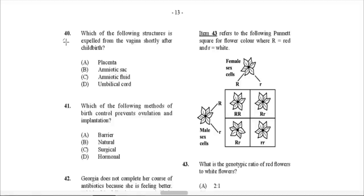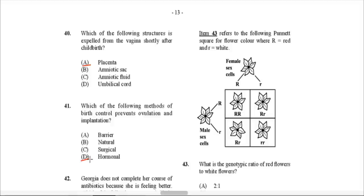Question 40: Which structure is expelled from the vagina shortly after childbirth? That would be A — the placenta, commonly known as the afterbirth. After the baby comes out, the placenta, which is the baby's life support during pregnancy, comes out following birth. Question 41: Which method of birth control prevents both ovulation and implantation? This would be hormonal — D. Hormones are used to stop ovulation from occurring. Some IUDs also produce hormones to stop implantation. The combination of preventing both ovulation and implantation would definitely be hormonal methods.